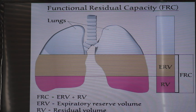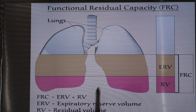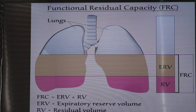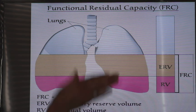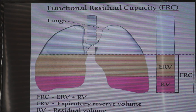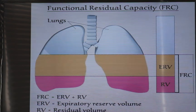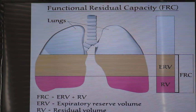For example, obesity significantly decreases the functional residual capacity. Abdominal masses such as ascites will also decrease it. The posture of the patient matters as well — if the patient is in the supine or prone position, the diaphragm will be pushed against the lung, decreasing the functional residual capacity. The lithotomy position will also decrease it.